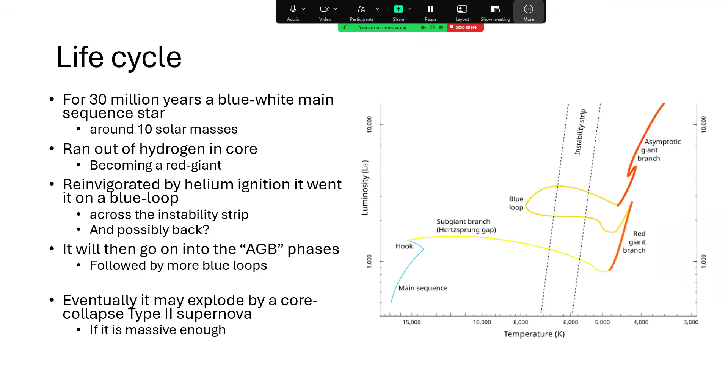And so what happens is that the core of the star shrinks and increases in temperature, and the outer layers of the star get forced outwards and expand into a red giant. So it traverses the path from the main sequence around that little bit that's called a hook. We'll have to come back and talk about the hook another time.